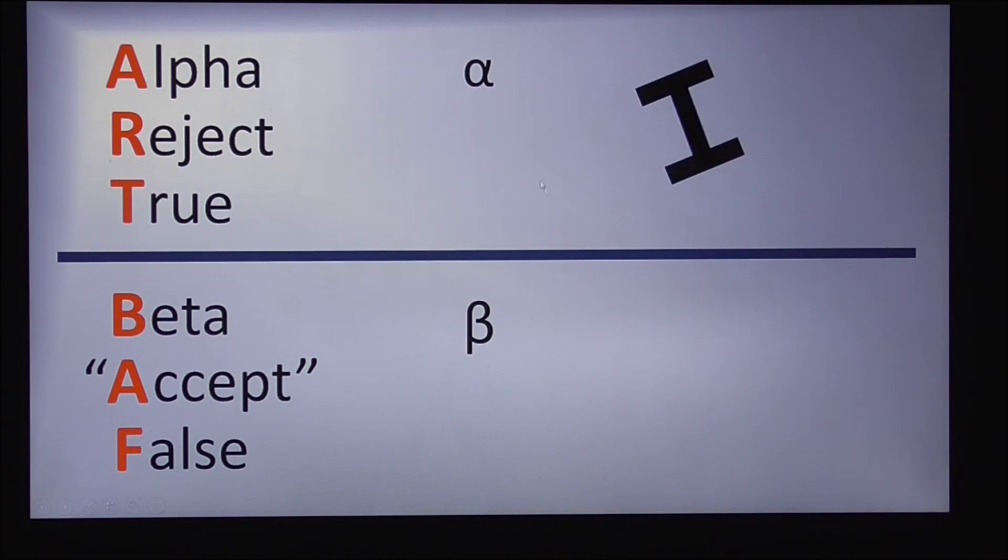Just to remind you, the probability of rejecting a true null hypothesis is a type 1 error, whereas accepting or failing to reject a false null hypothesis is a type 2 error.